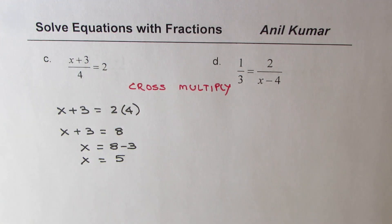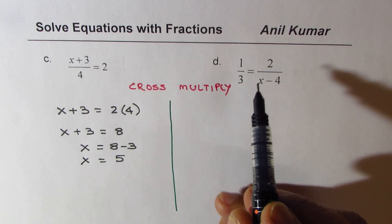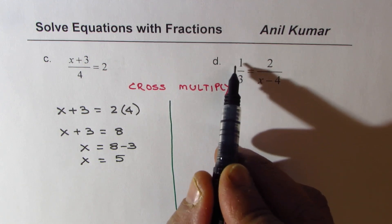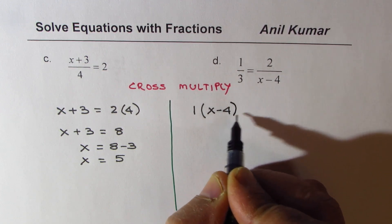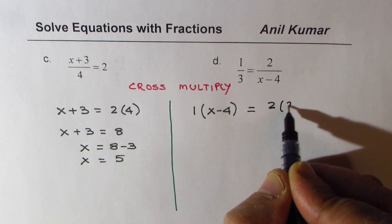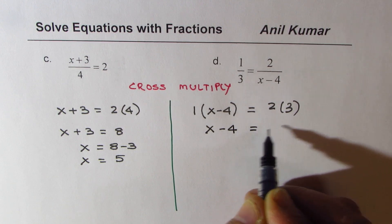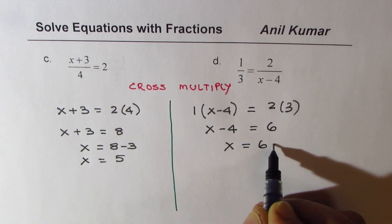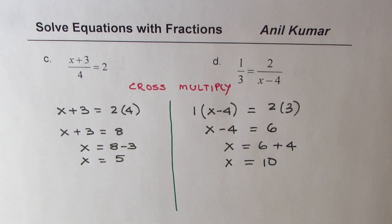In this case, if you cross multiply you get 1 times (X minus 4) on the left side, and on the right side 2 times 3. Opening the bracket gives X minus 4 equals 6. Adding 4 to both sides gives X equals 6 plus 4, so X equals 10. You see how easy it is — this approach avoids fractions and easily solves linear equations.